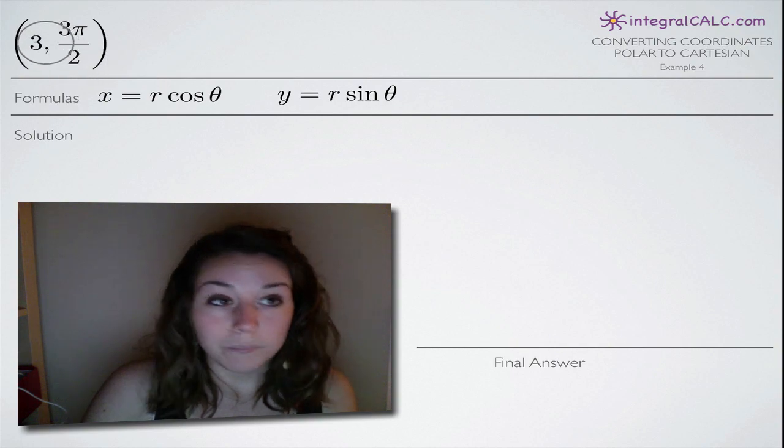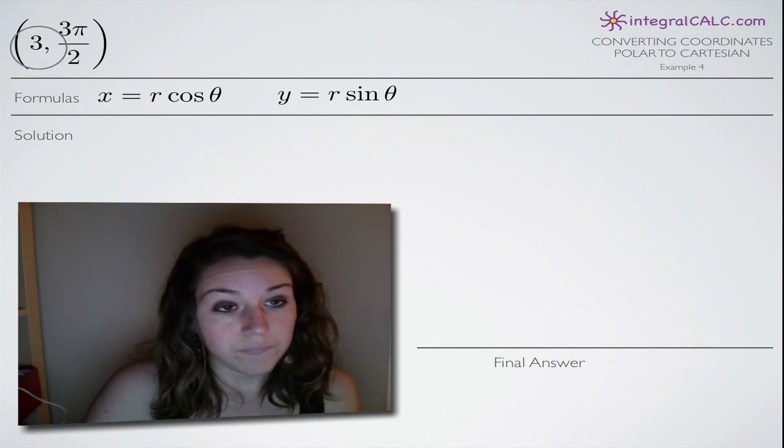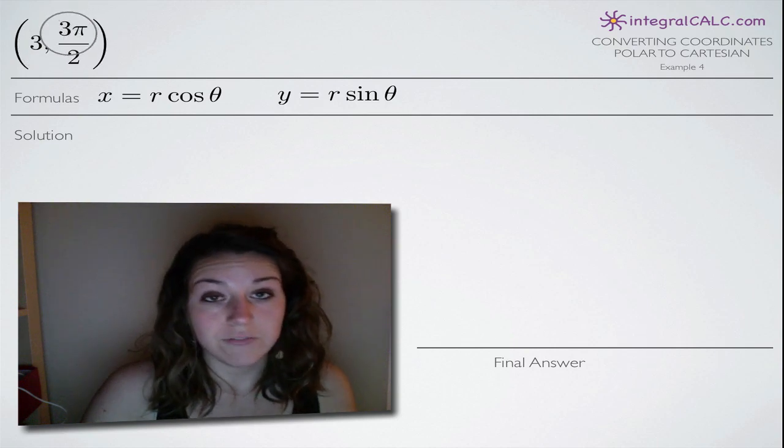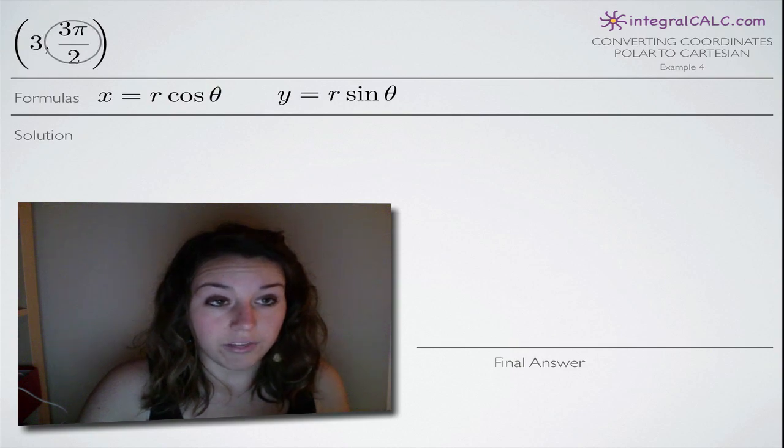So in a polar point, the first coordinate here, 3, represents r and 3π/2 represents theta. So instead of the coordinates being x, y, they are r, theta.